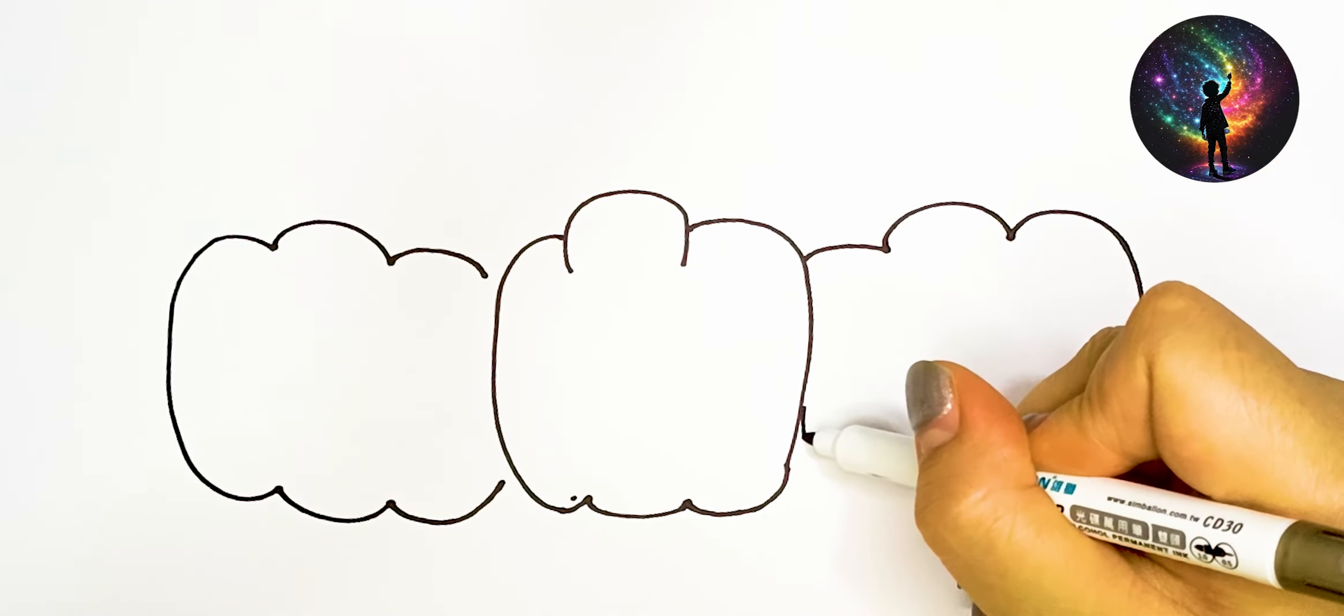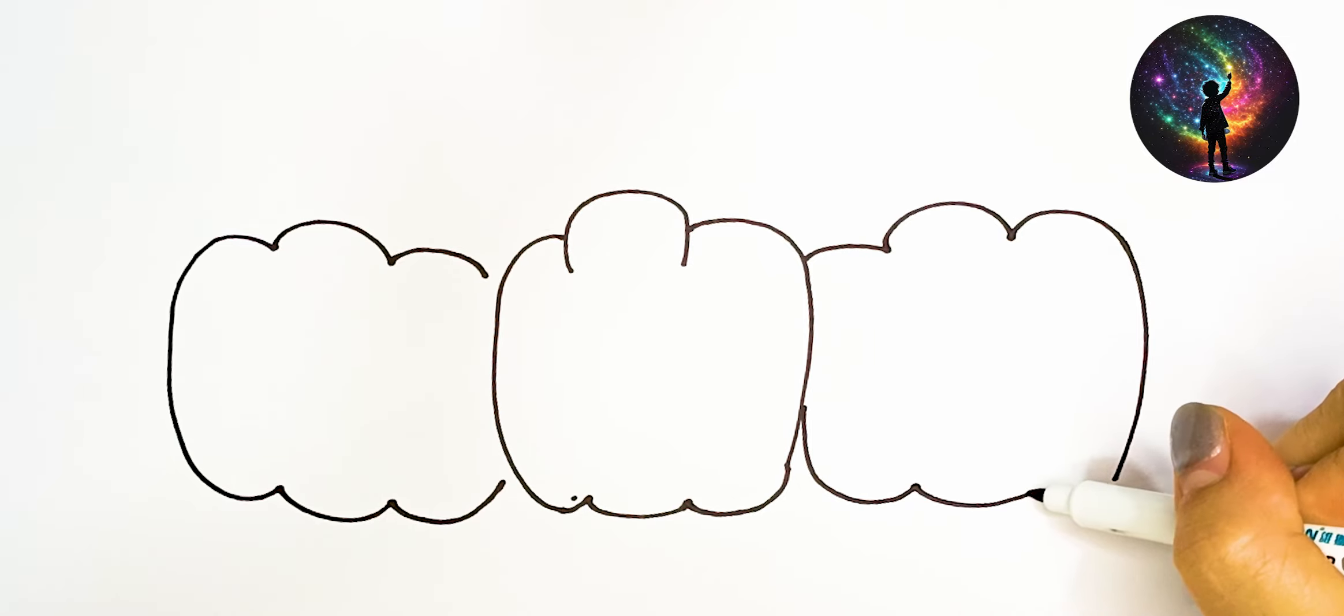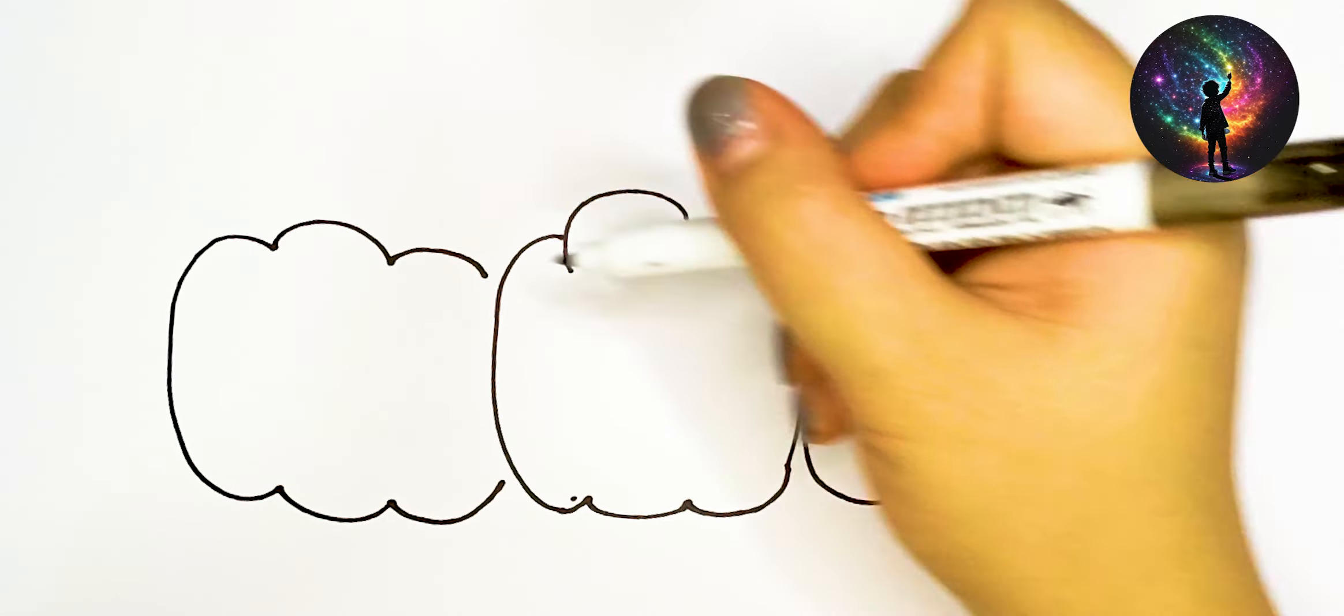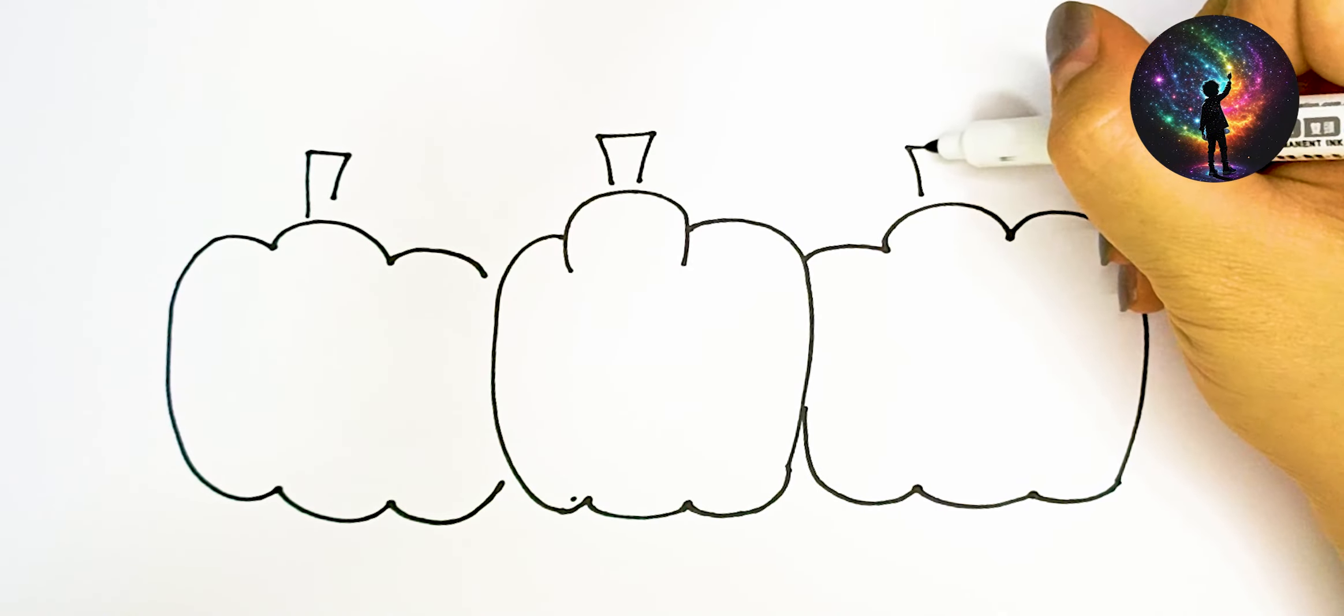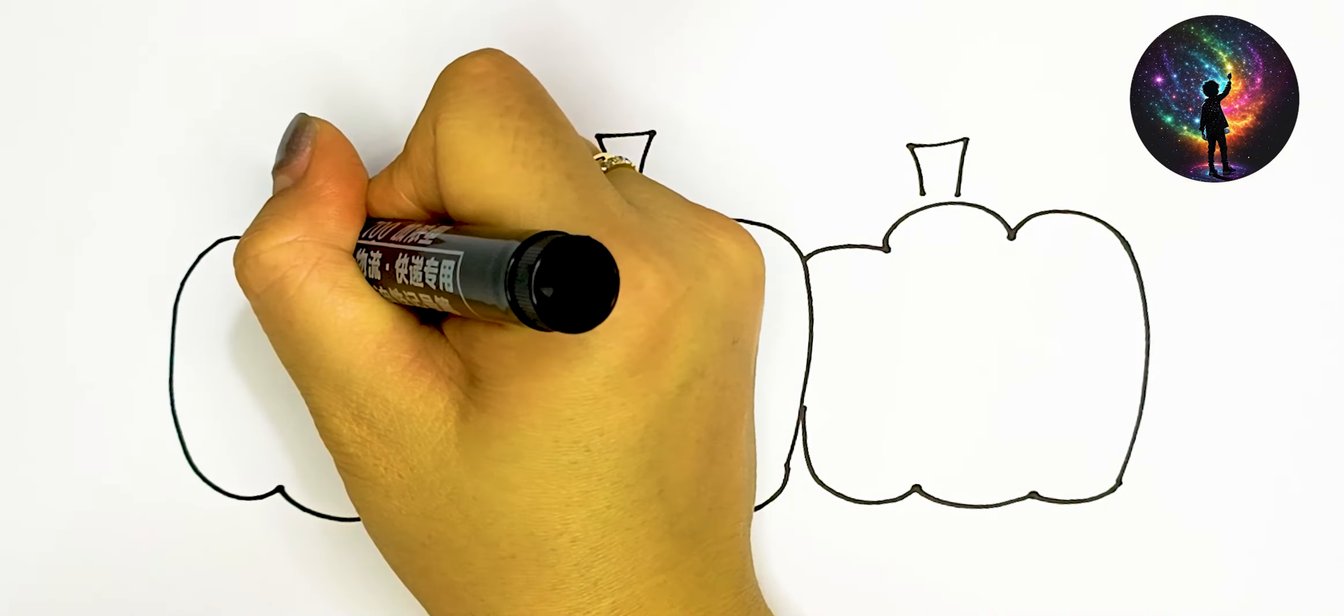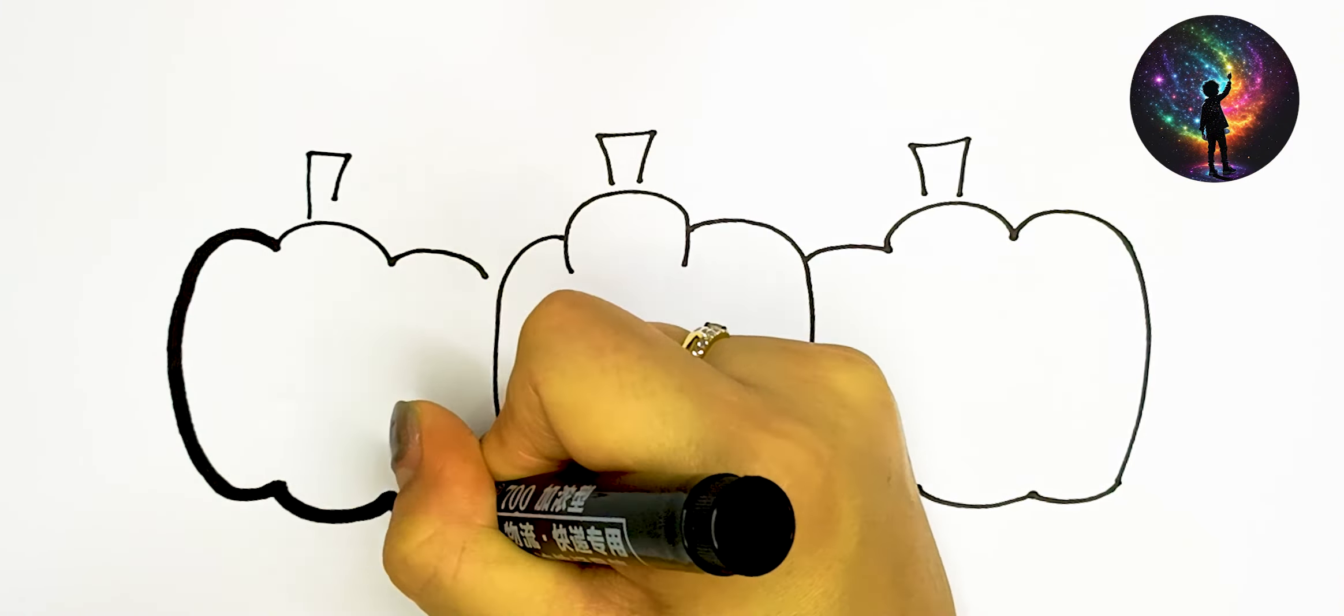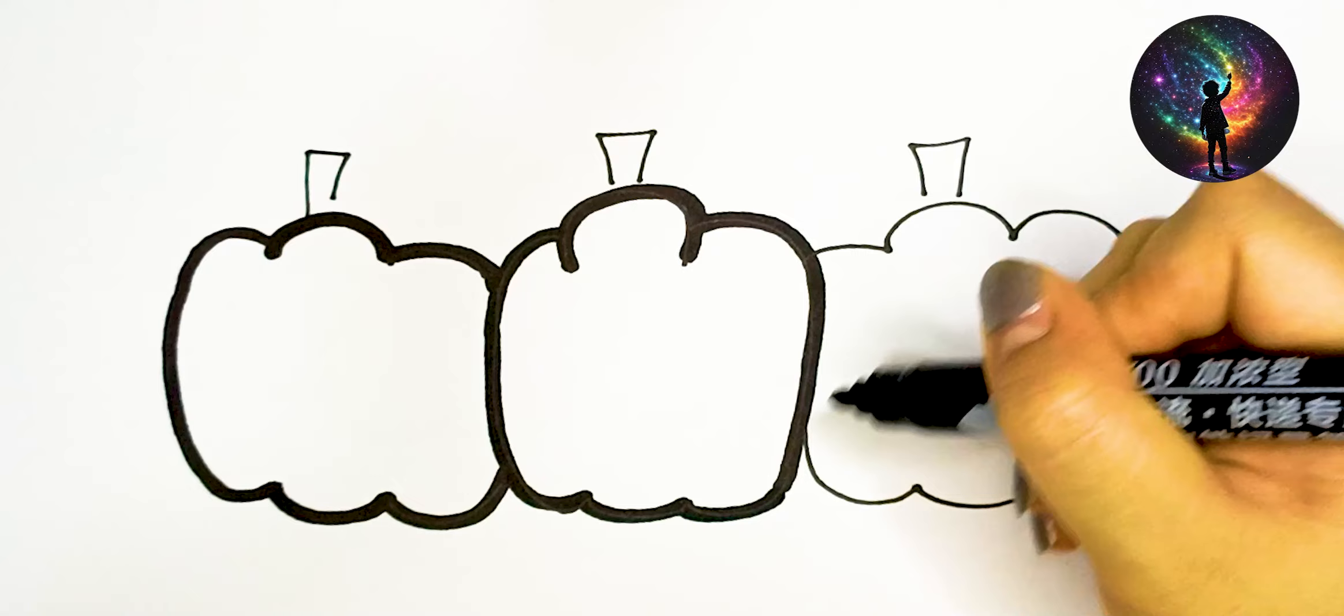A, B, C, D, E, F, G, H, I, J, K, L, M, N, O, P, Q, R, S, T, U, V, W, X, Y, and Z. Now I know my ABCs. Next time won't you sing with me?